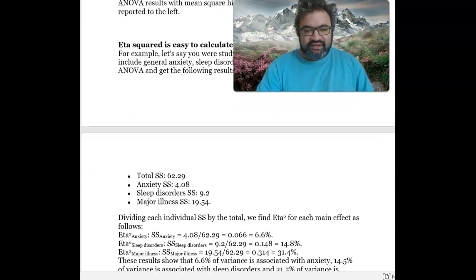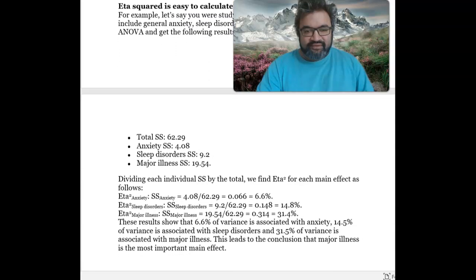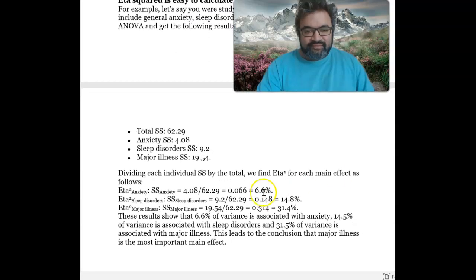There's an example of 4.08 for anxiety, and then total sum of squares, which is 62.29.